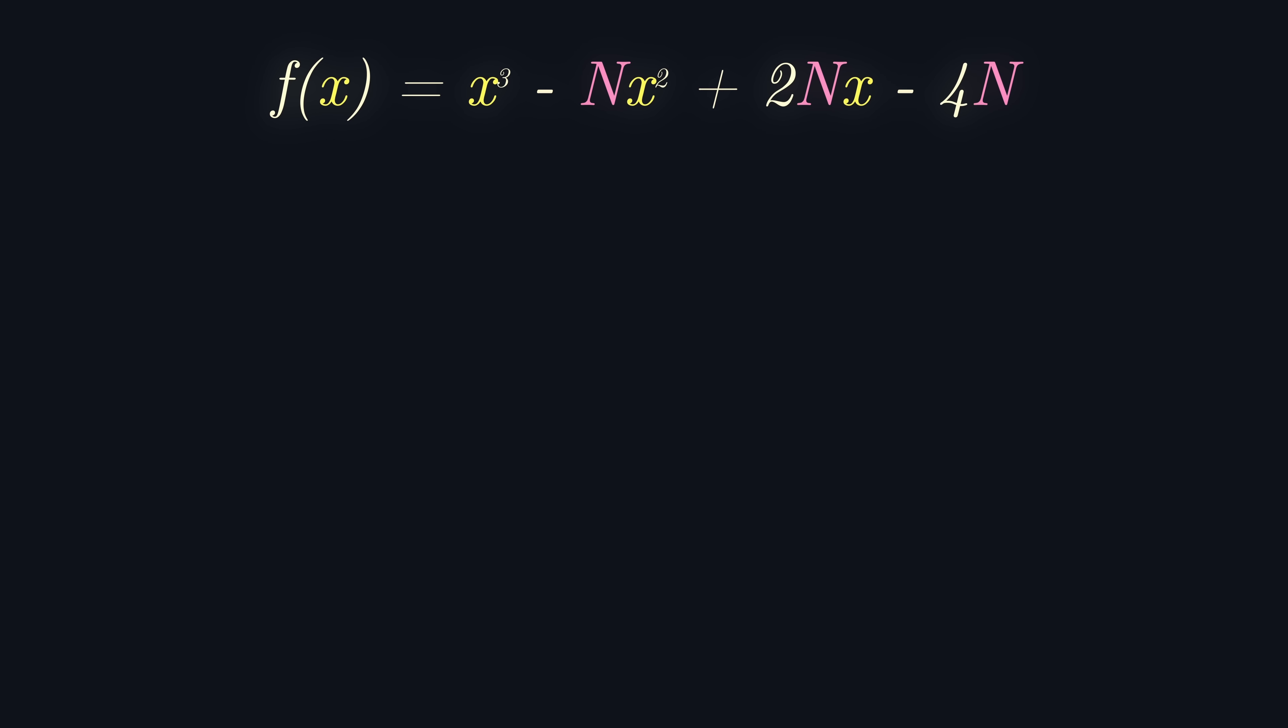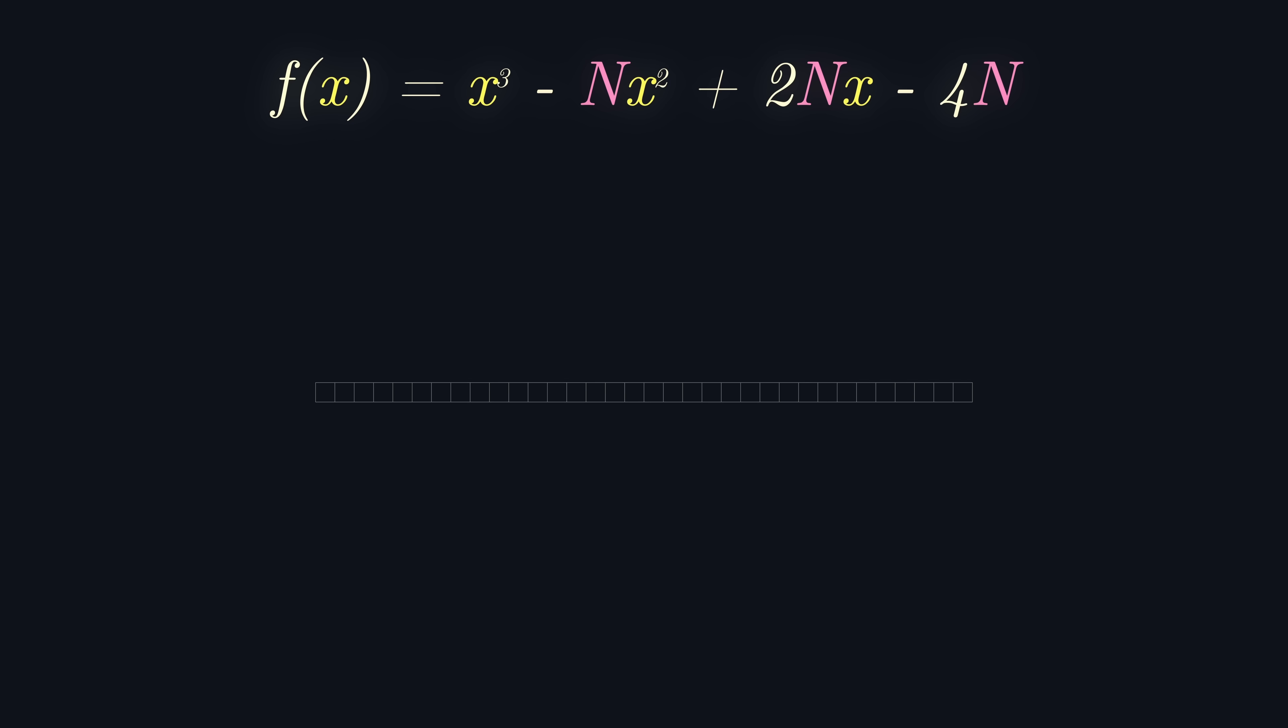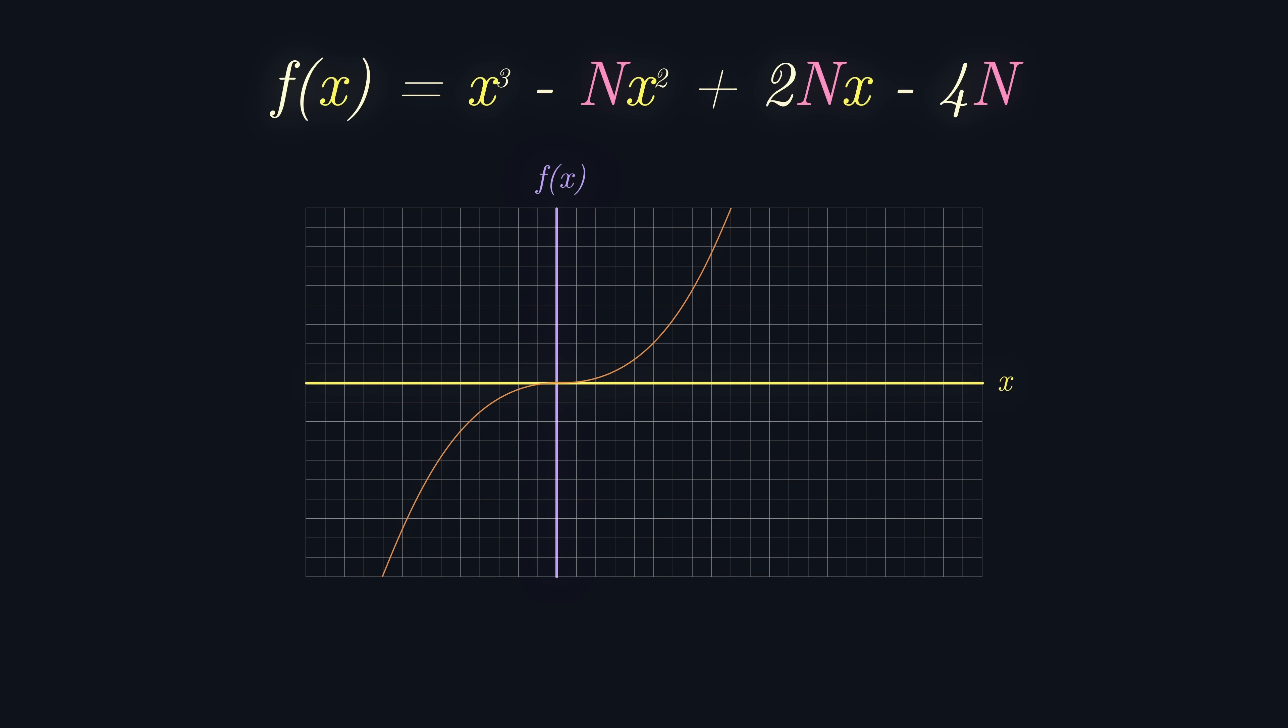One approach to showing that f of x has one real root and two complex roots would be graphical. Our goal would be to show that the equation y equals f of x intersects the positive x-axis at only one point, and hence the other two roots wouldn't lie in the real numbers.